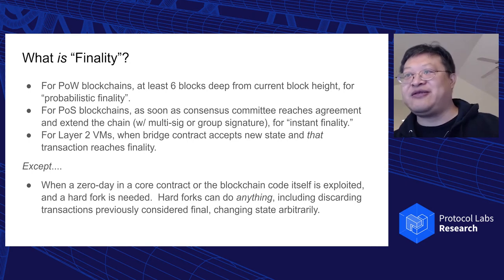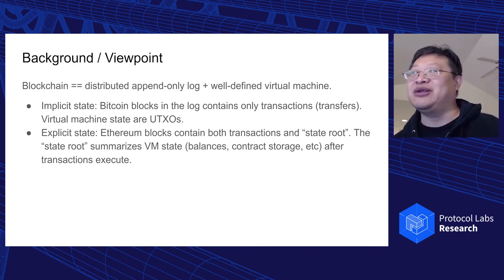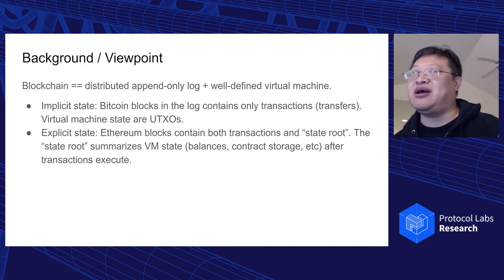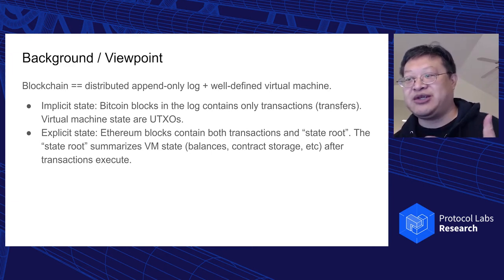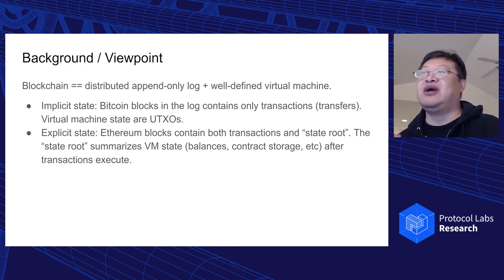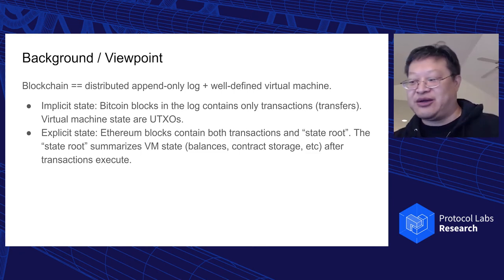But if it's catastrophic, there's not much we can do other than something like a hard fork. Governance-type decisions are needed and things tend to get messy, because hard forks can undo transactions and change state arbitrarily. Some background: blockchains are an append-only log with a well-defined virtual machine. Bitcoin puts in the log entries just the transactions — the state of the virtual machine is implicit, everybody has to figure it out for themselves. Ethereum contains both the transactions and the state root, and the state root summarizes the VM state.